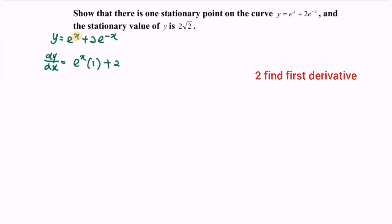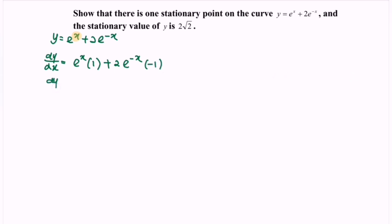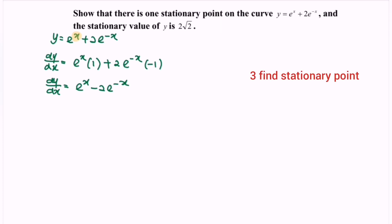Plus 2 times the derivative of e^(−x): focus on the power, differentiate with respect to x, and we obtain −1. So dy/dx = e^x − 2e^(−x). Next, find the stationary point by setting dy/dx equal to 0.